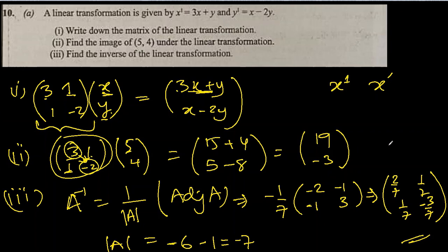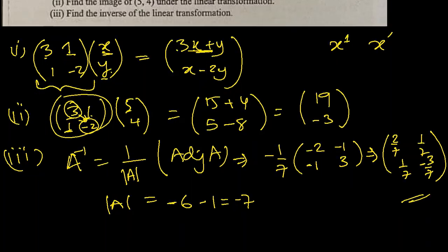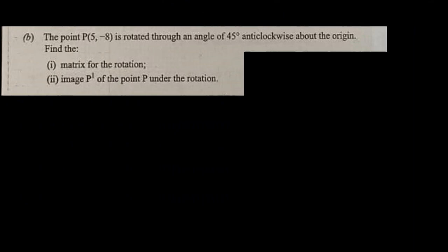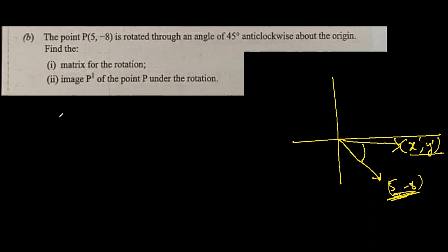Let's move on to the next part. The point (5, -8) is rotated through an angle of 45 degrees anticlockwise. So (5, -8) will be somewhere here, and this vector is rotated by 45 degrees. They're asking what will the transform be after rotation, what will this coordinate become. For that we have a straightforward formula.